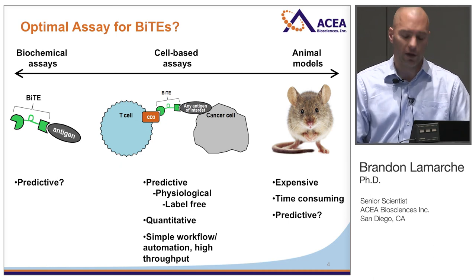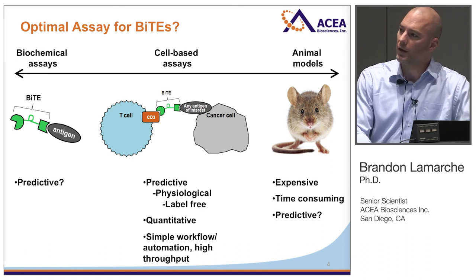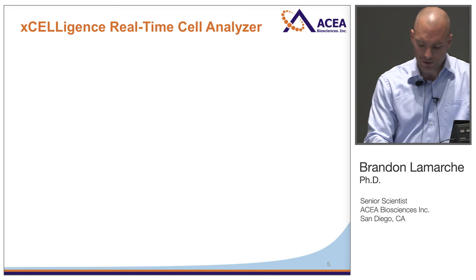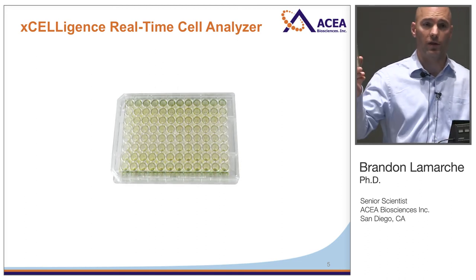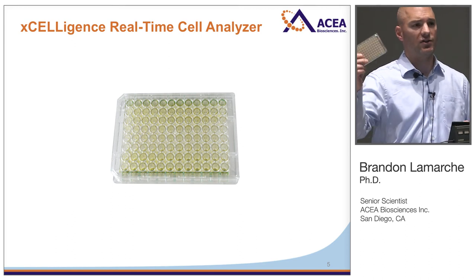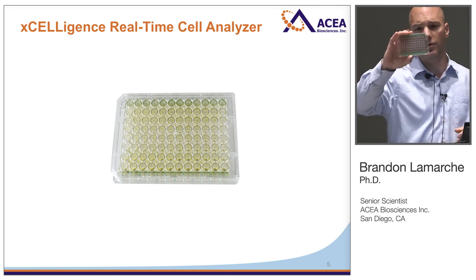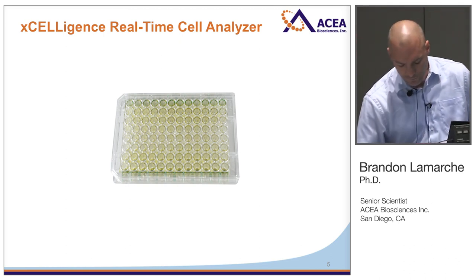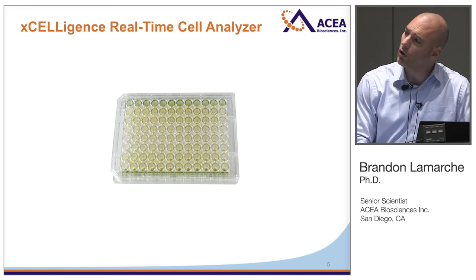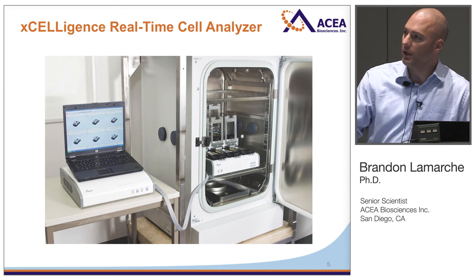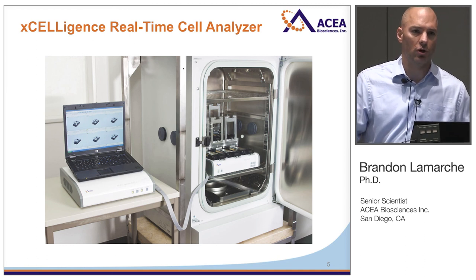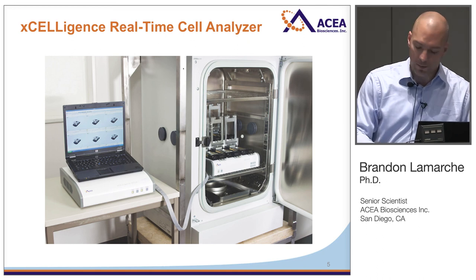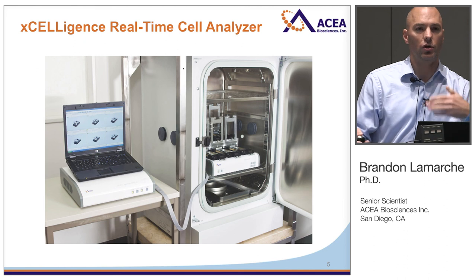You'd also like the workflow to be as simple as possible, automated, and high throughput. What I'm going to show you now is that a technology that ACEA makes, called the Excelligence real-time cell analysis instrument, meets all these criteria. The best way to introduce this instrument is to start with the microtiter plates it uses — they have the same dimensions as any standard microtiter plate, but the difference is that there are electrodes integrated into the bottom of each well. The plates go into the instrument, which sits inside a standard tissue culture incubator so you can control temperature, humidity, and atmospheric composition.